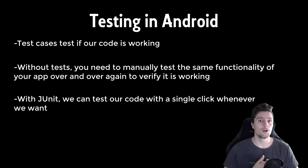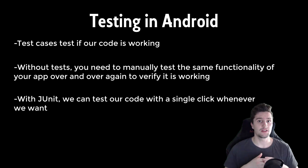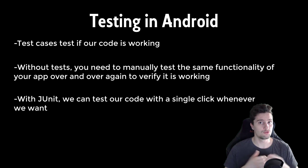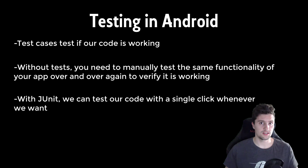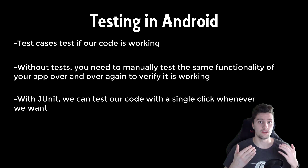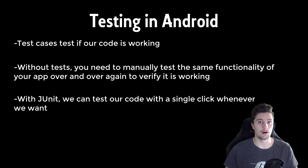With JUnit, we can automate the testing process. We can explicitly write test cases that tell our program to do this, do that, and afterwards verify that a condition must be true or false. That means we can verify with a single click in a few milliseconds that the functionality of our app is working.